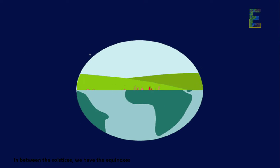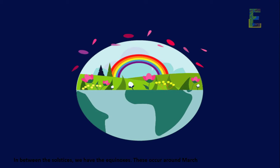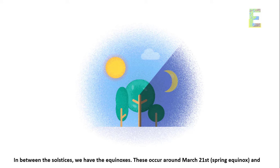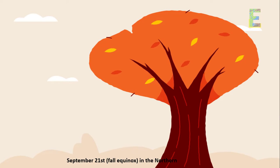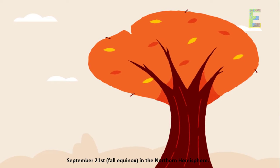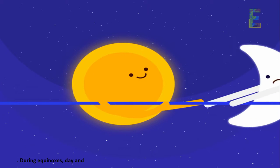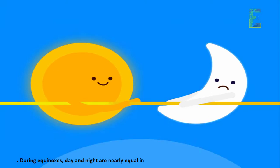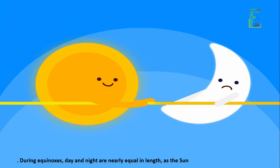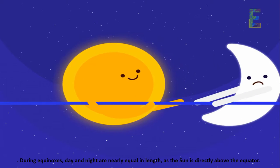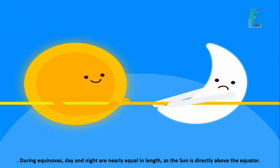In between the solstices, we have the equinoxes. These occur around March 21st — the spring equinox — and September 21st — the fall equinox — in the northern hemisphere. During equinoxes, day and night are nearly equal in length, as the sun is directly above the equator.